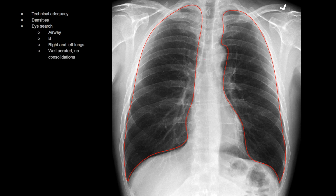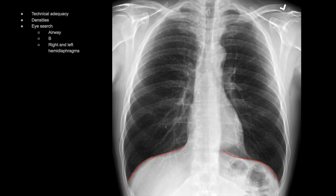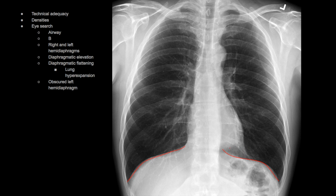B is for breathing. Pointed out here is the right and left lungs — make sure they are well aerated without any focal consolidations. Make sure to look at the lung apices bilaterally, every field of the right lung including the right upper, right middle, and right lower lung, and the left lung. Ensure that you have crisp costophrenic angles — you can see pleural effusions or blunting of the costophrenic angle here. Next, look at the right and left hemidiaphragms. You have to be able to see the entire left hemidiaphragm, even below the heart. If it is obscured, that means there is a focal consolidation in the retrocardiac space within the left lower lung. Check for any unilateral diaphragmatic elevation, and note that diaphragmatic flattening is associated with emphysematous disease and hyperexpansion of the lungs.